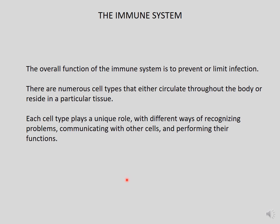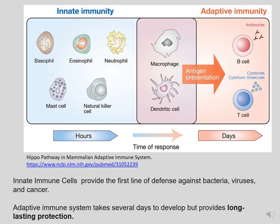The overall function of the immune system is to prevent or limit infection. There are numerous cell types in the immune system. They circulate throughout the body, or they can reside in particular tissues. There are many immune cells in the lungs or in other tissues as well. Each cell type plays a unique role with different ways of recognizing problems. They can communicate with other cells and also perform unique functions. The mammalian immune system consists of two distinct parts: innate immunity and adaptive immunity.